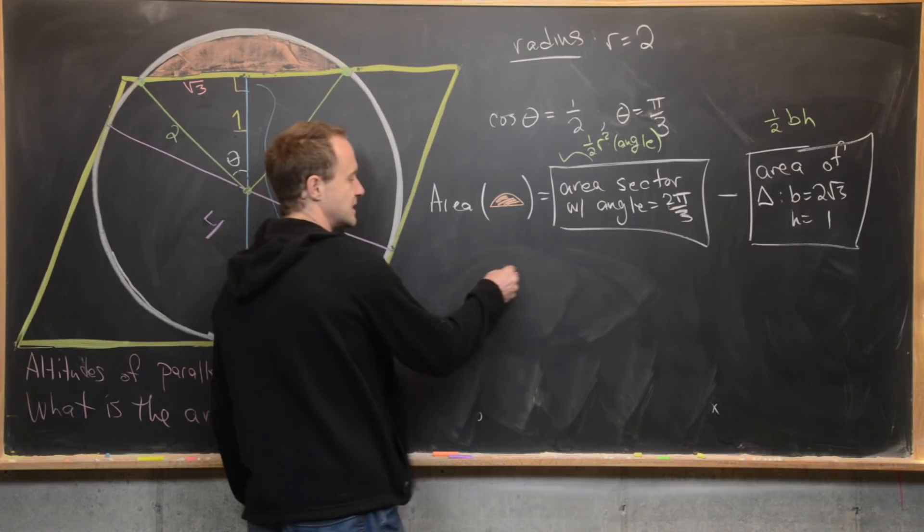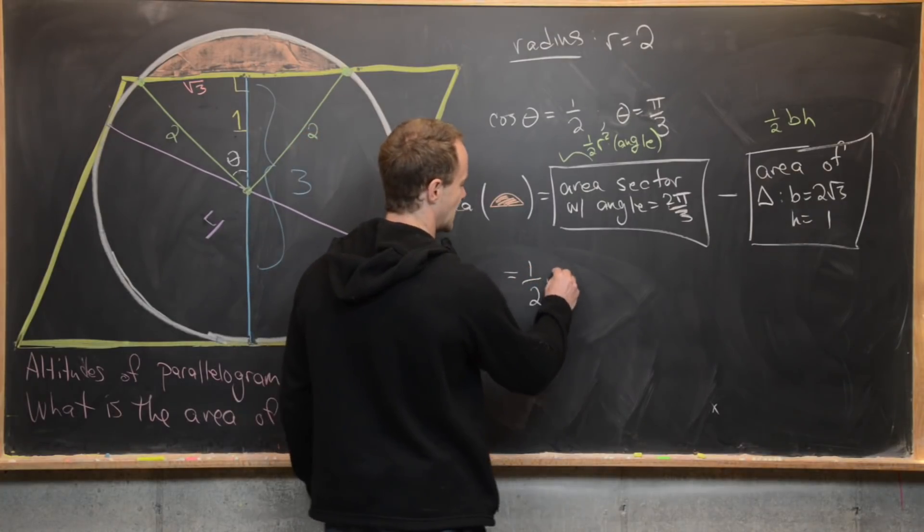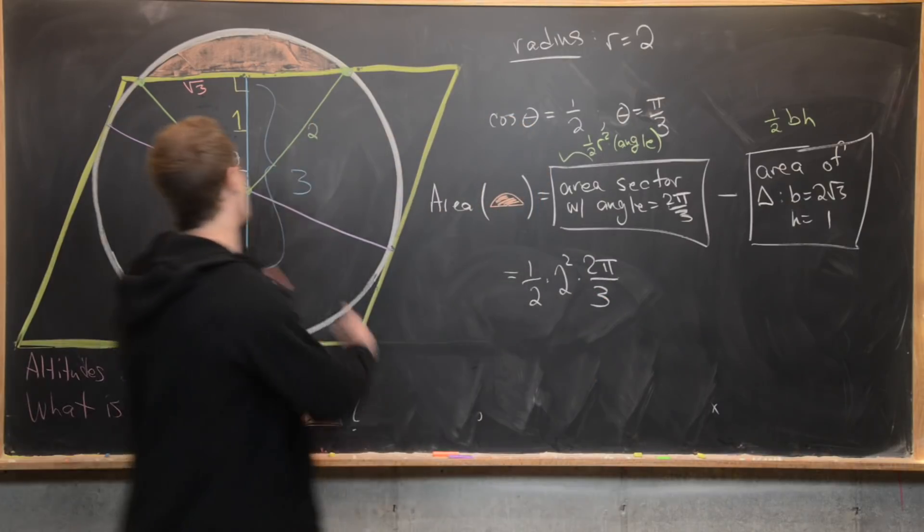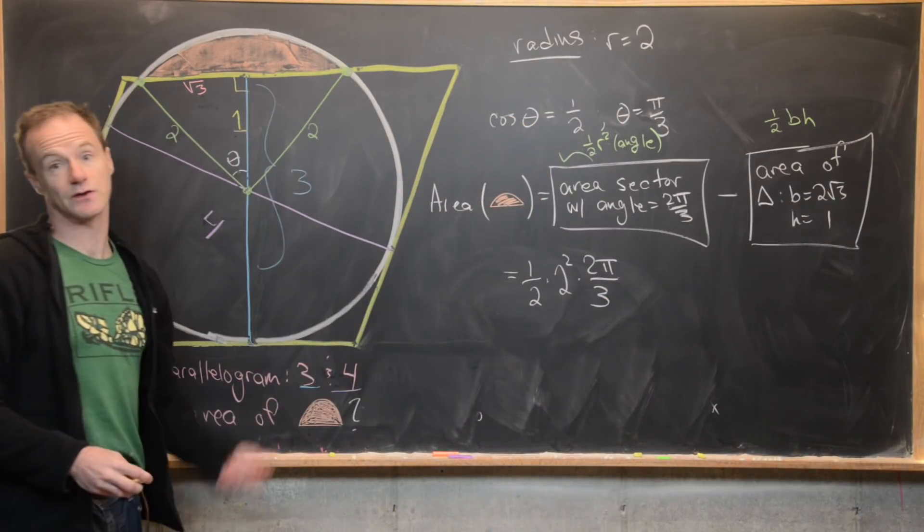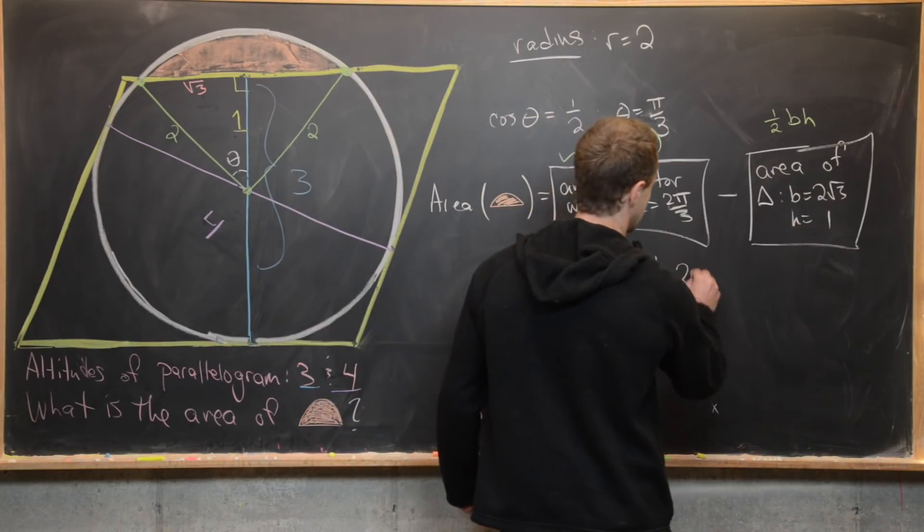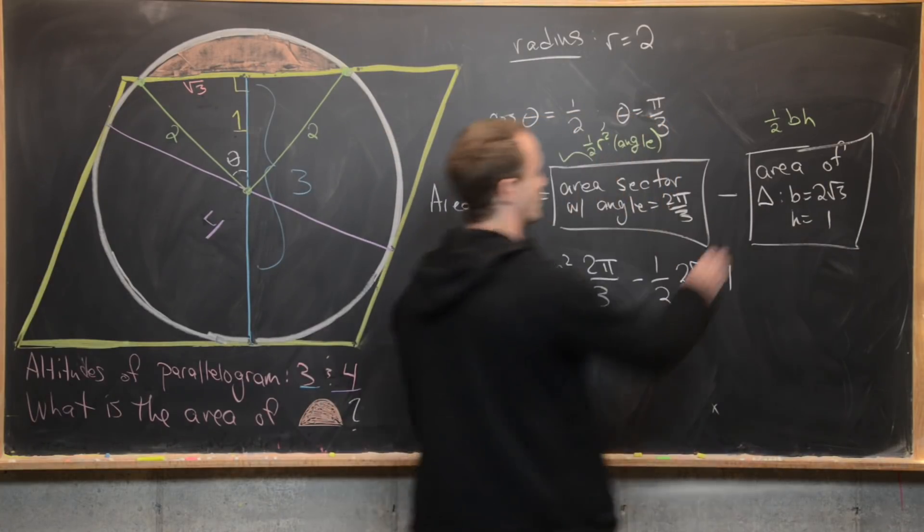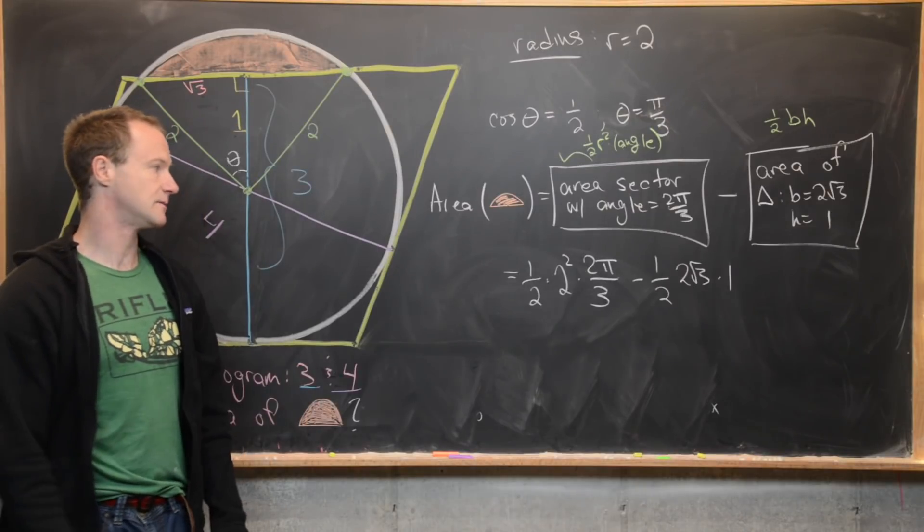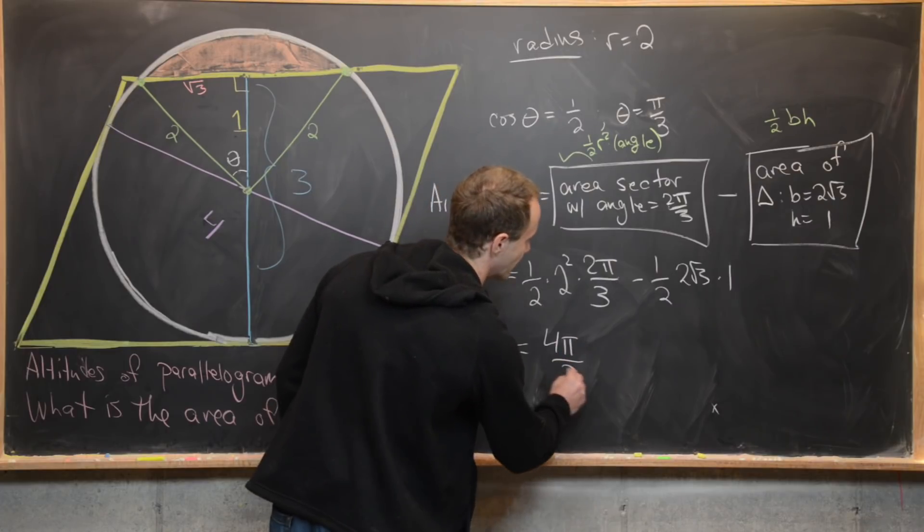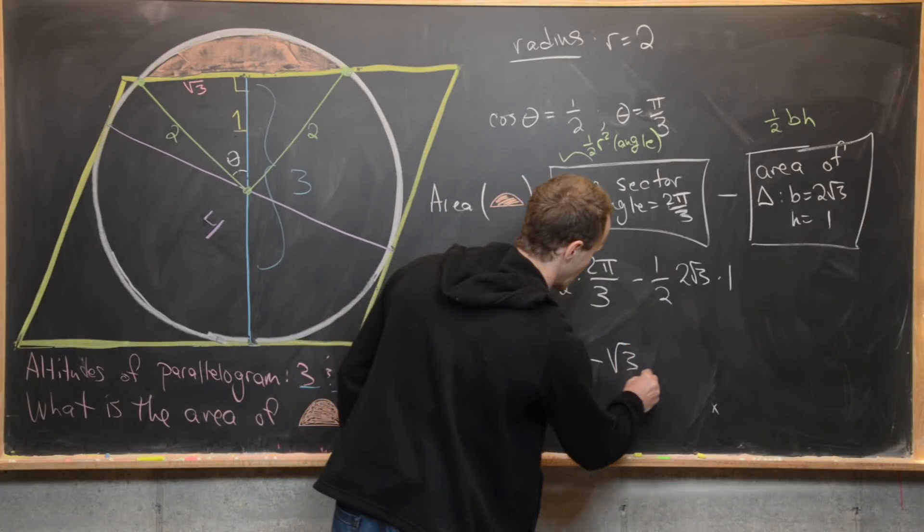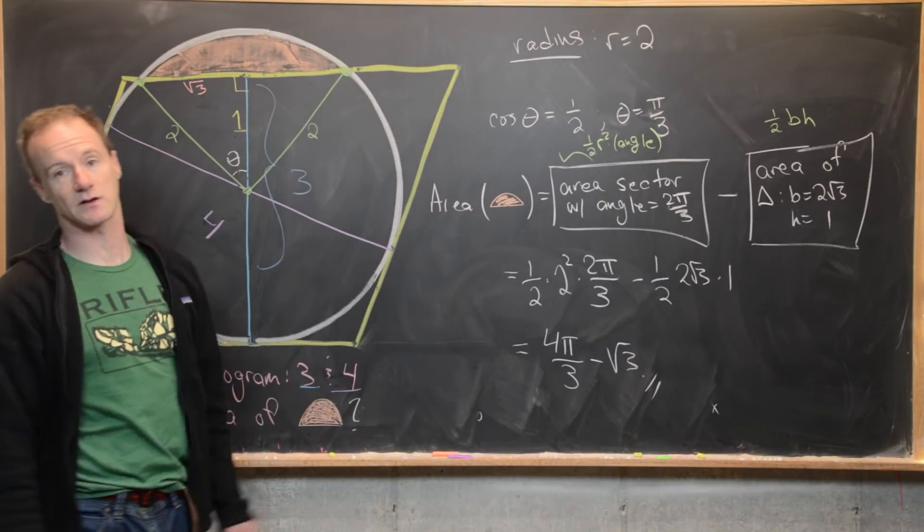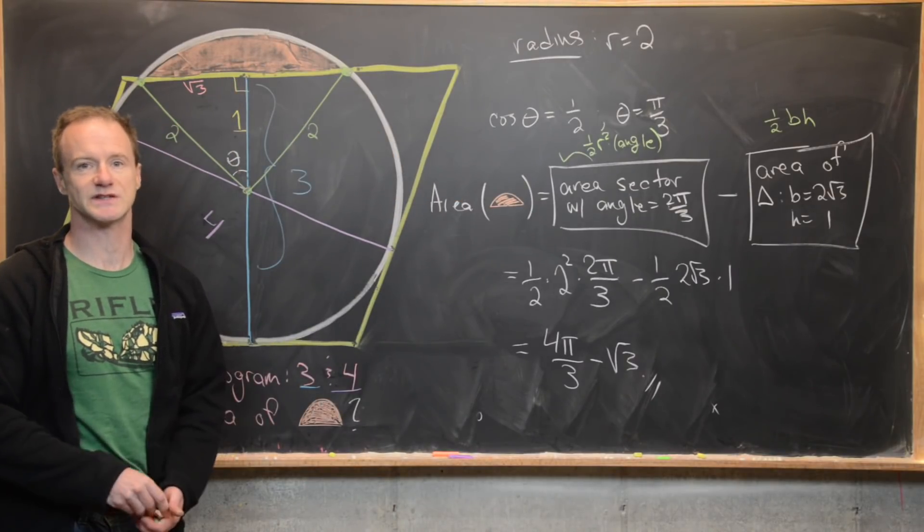But now we're essentially done. So here we have one half times two squared times two pi over three. That's the area of this entire pizza slice—the sector of the circle—minus one half times two root three times one. That's the area of that triangle. So now putting all of this together, we see that we have four pi over three minus the square root of three. So that's the area of this little capped bit here. And that's a good place to stop.